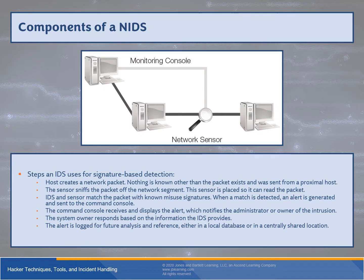For a NIDS, the core components are a sensor that observes network traffic and a monitoring console. The workflow is the same: create the packet, sniff it, match against known signatures, generate an alert if necessary, send it to the monitoring console, then respond and log. The command console is where the system administrator manages, monitors, tunes, and configures the system — accessible from anywhere or restricted to a specific system depending on security levels. The network sensor is a discrete application running on a designated device with a promiscuous network card.